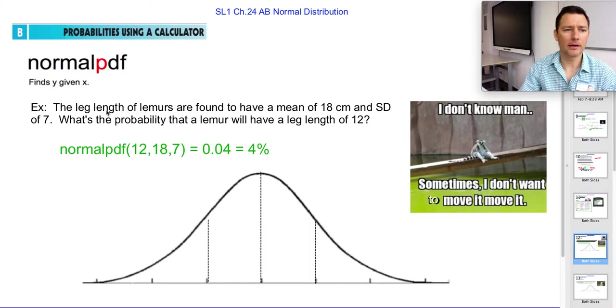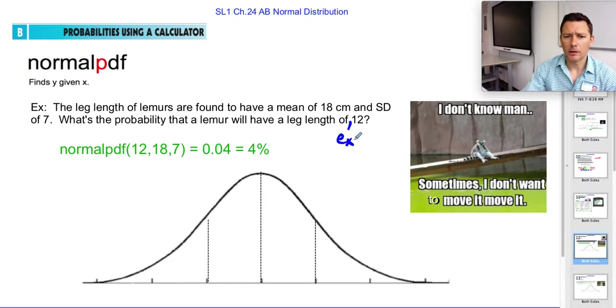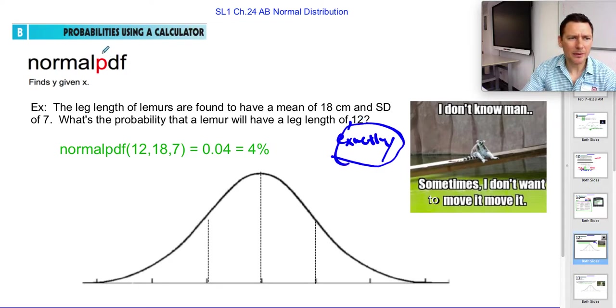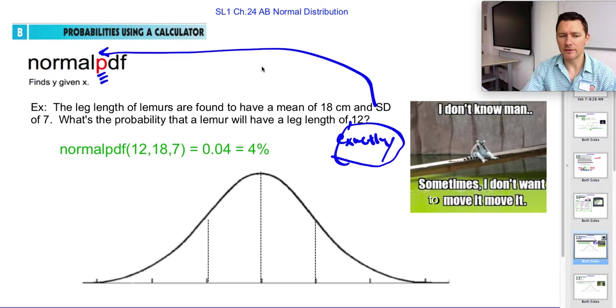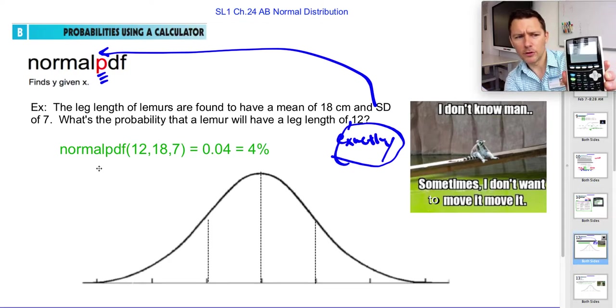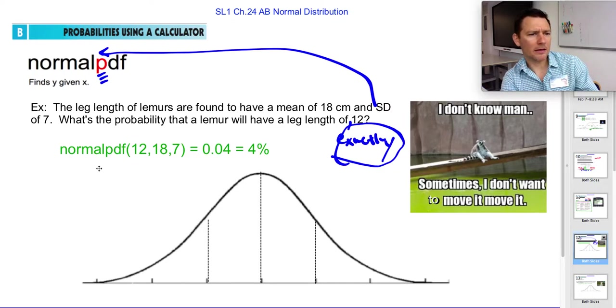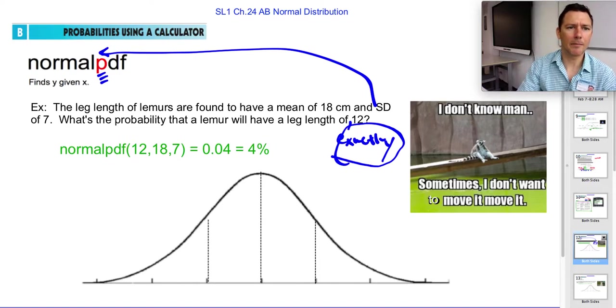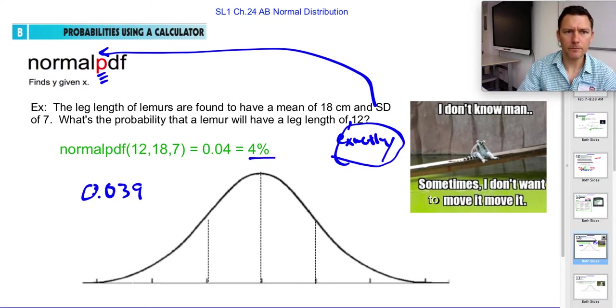And the first one we're going to look at is normal PDF. Here's an example. The leg length of lemurs are found to have this mean and this standard deviation. What's the probability that it will have a leg of exactly 12, exactly? Whenever you see this idea of exactly, I think about this meaning precise or exactly precisely. And that makes me think of PDF. That's how I keep straight PDF and CDF. So you just type in, you'd say normal PDF, it says x value, you'd say 12, the mean is 18, and the standard deviation is 7. You say go, depending on your calculator model. I got on mine 0.039, which is 4%. Cool. PDF, precise.